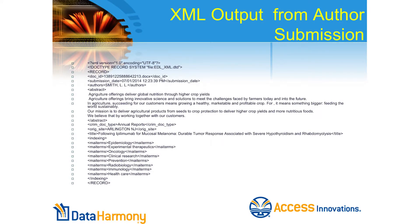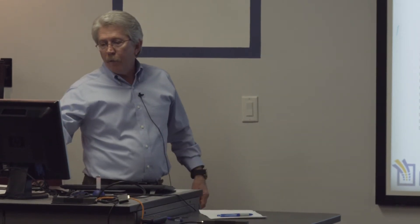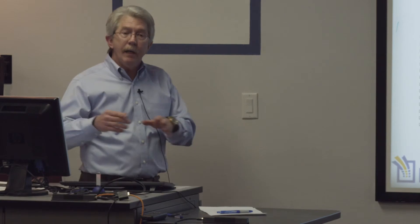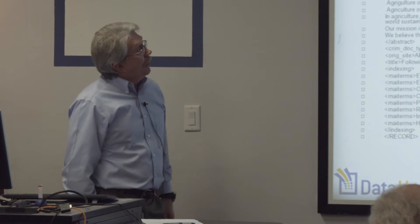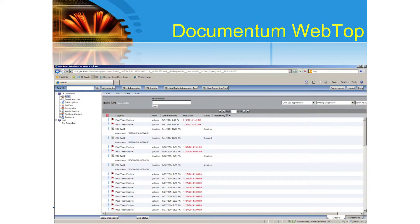When you hit submit, it takes the full text document and it goes to the Documentum repository wherever they place it. It creates an XML file — you can see the file EDL XML DTD. EDL identifies it as a Documentum file, and it shows the DTD there as well. This is basically what it would produce. You can see the MAI terms that were selected by the author, and it puts in the abstract and title. Anything the author has filled in goes into the XML file.